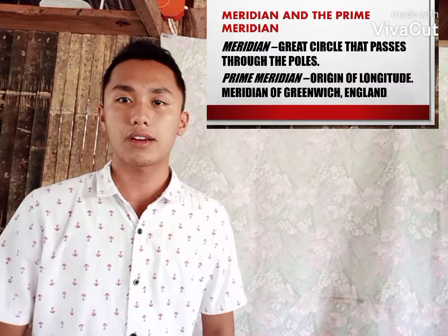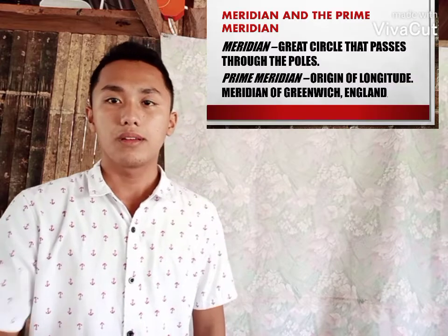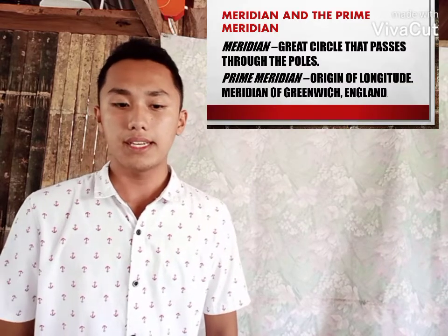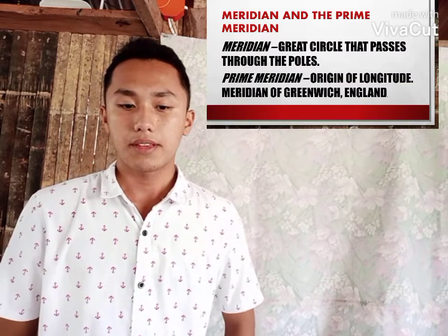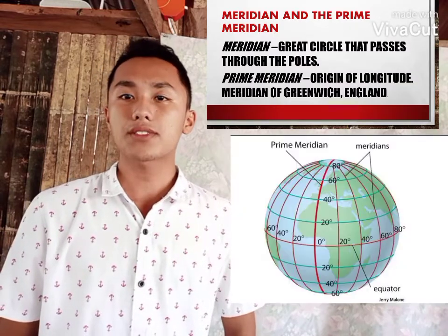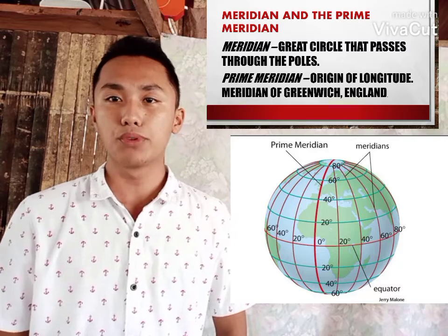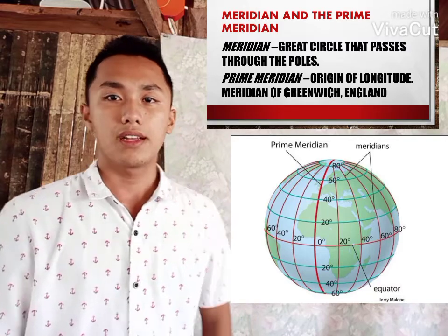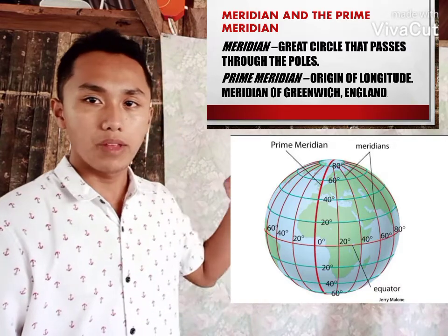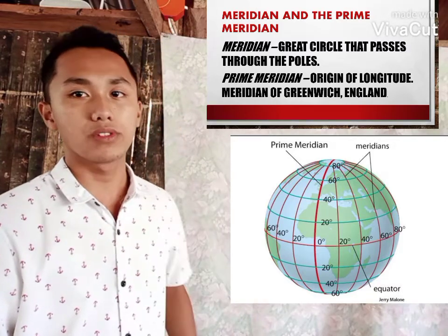Now, what is a meridian and a prime meridian? In our globe, the meridian is a great circle that passes through the poles — the north and the south poles.